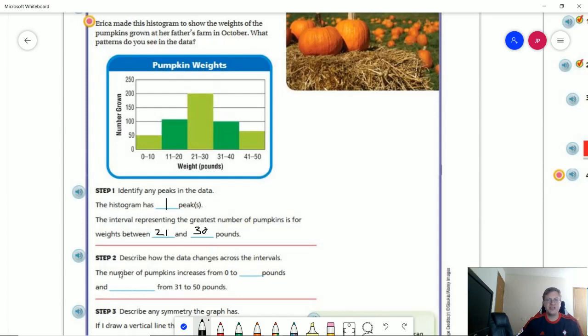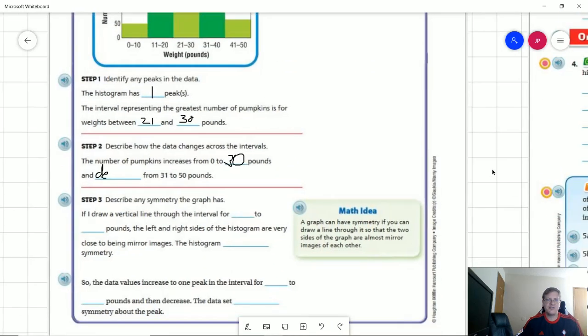Describe how it changes. So we go from zero all the way up to 50. I'm sorry. Oh, I see what they want us to do. So we increase from zero to 30 pounds. And then we are decreasing. The value of this is going down as the weight goes up. So we can put decreases. And I'm just going to leave that there just for time.